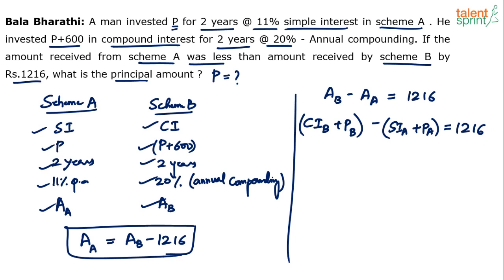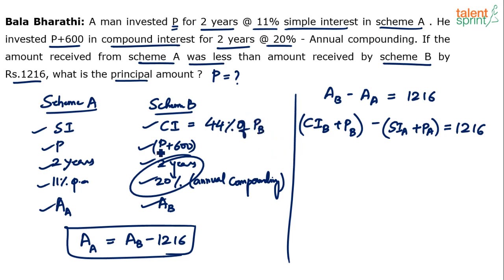Substituting the values: compound interest for 2 years at 20% is calculated using the effective rate formula A plus B plus AB/100, giving 20 plus 20 plus 4 equals 44%. So compound interest of B is 44% of (P plus 600). Simple interest for 11% over 2 years is simply 22%.